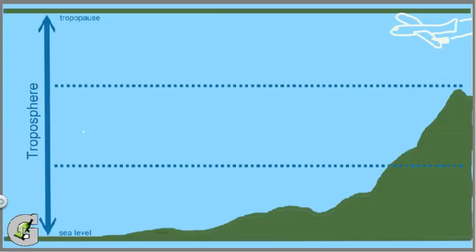So I've drawn a diagram here of the troposphere from sea level to the tropopause at the top, about 10 to 12 kilometers up, and I've broken it into three zones that scientists use to help classify clouds as to where they occur in the troposphere.